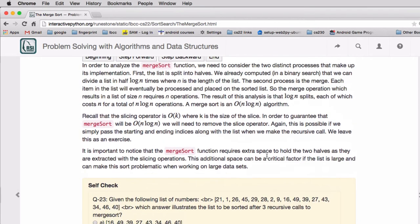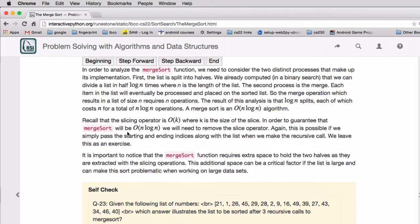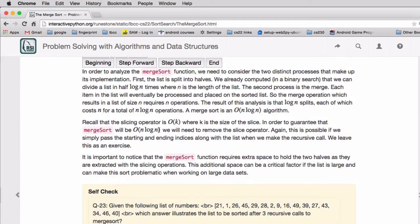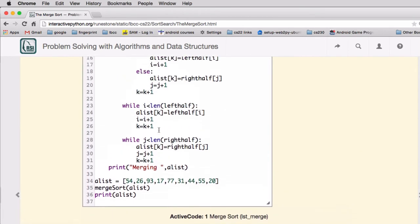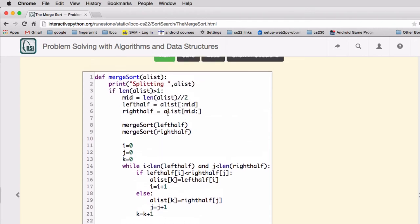So there's an analysis here, but basically merge sort is O of N log N. It does have one disadvantage, it uses a lot of memory. And that's because it has to make a copy of each of the halves.